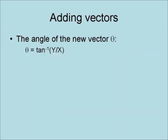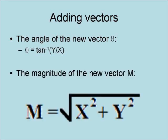To find the angle of the new vector, denoted as theta, we use theta equals the arctangent of y over x. To get the magnitude of the new vector, denoted as m, we use m equals the square root of x squared plus y squared.